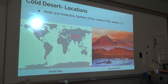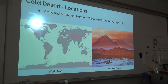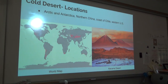Cold deserts are most likely found in the polar regions of the Arctic and Antarctica, but several major cold deserts can be found in other areas, such as northern China, the coast of Chile, and parts of the western United States. Some of the world's major cold deserts include the Gobi Desert, the Atacama Desert, and the Great Basin Desert.